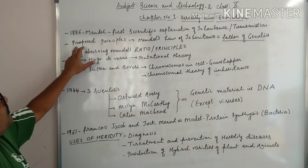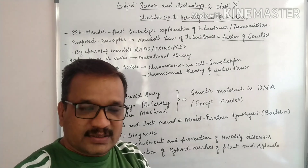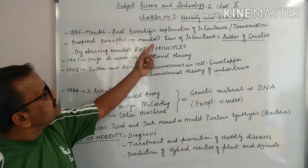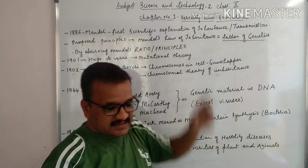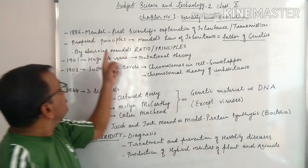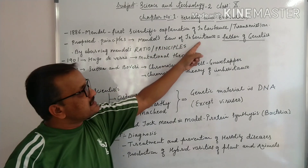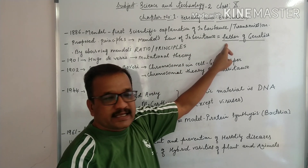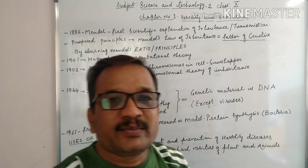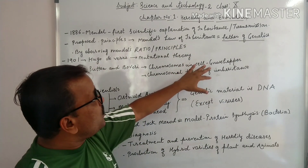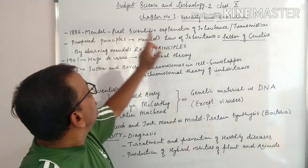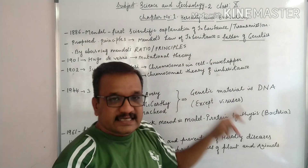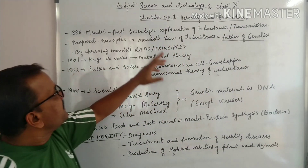Mendel proposed a number of principles, and the most important principle was the law of inheritance. Because Mendel proposed the law of inheritance, he is called the father of genetics. If anybody asks why Mendel is called the father of genetics, the answer is: because he proposed the principle of law of inheritance.